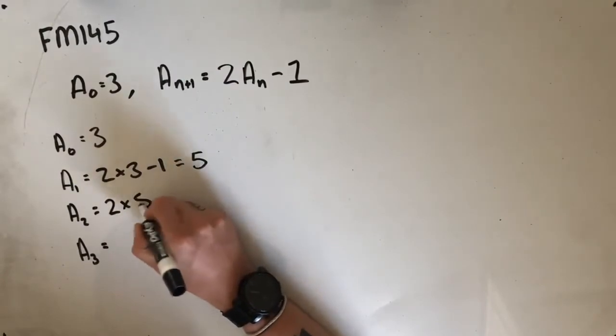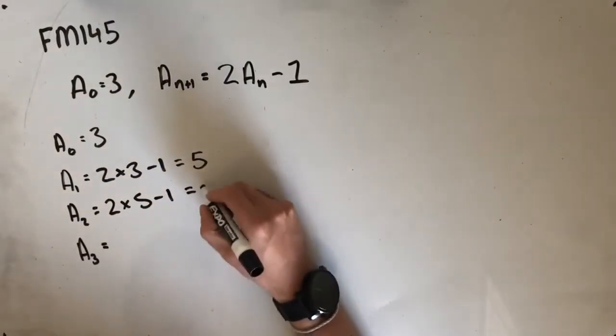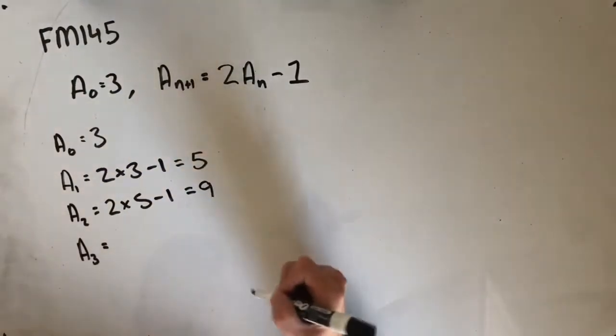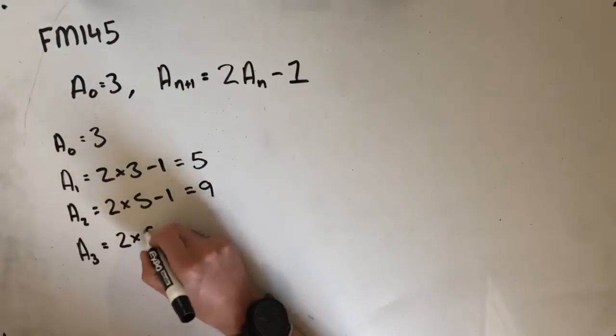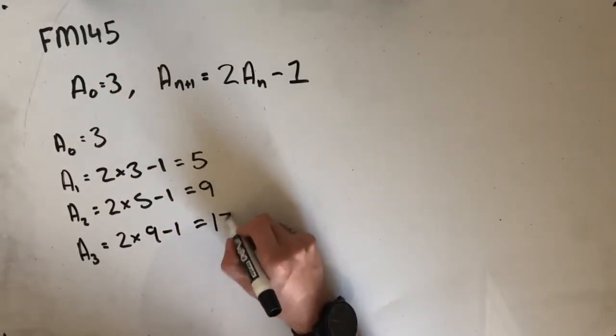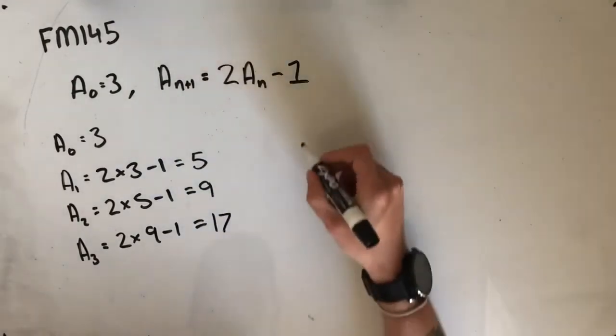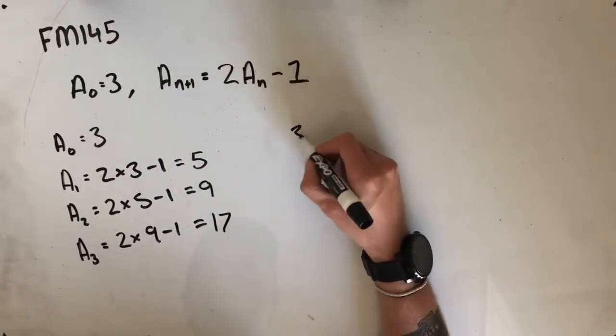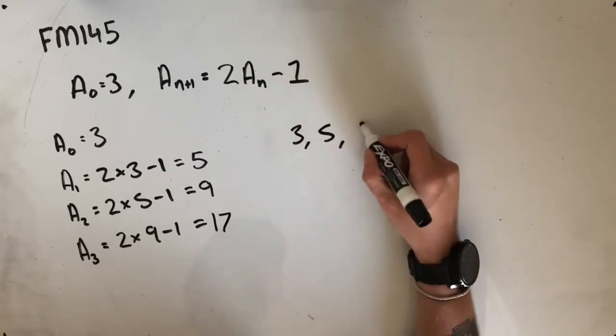Next value, 2 times 5 minus 1. Plugging that into a calculator and doing it in your head, you're going to get 9. And then 2 times 9 minus 1. Once again, calculator or head should give you 17. So the first four terms in our sequence should be 3, 5, 9, 17.